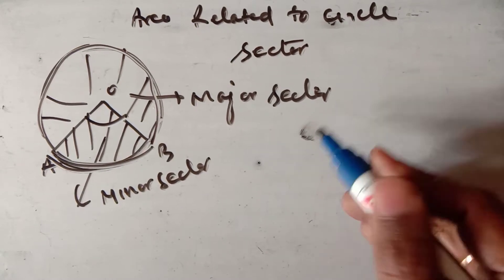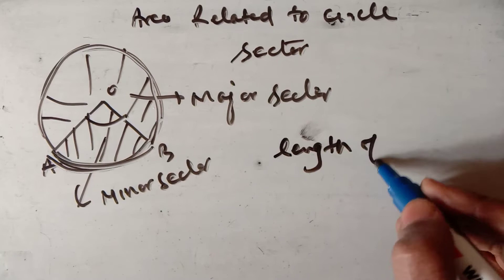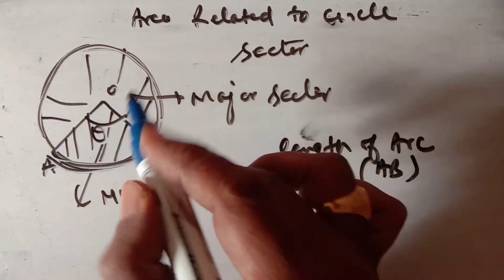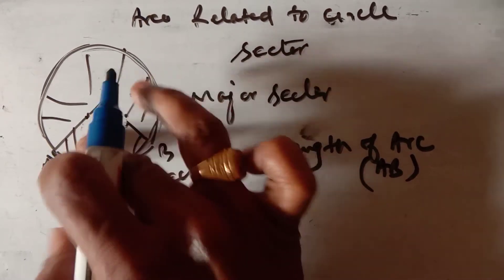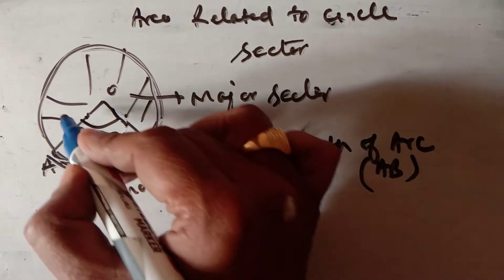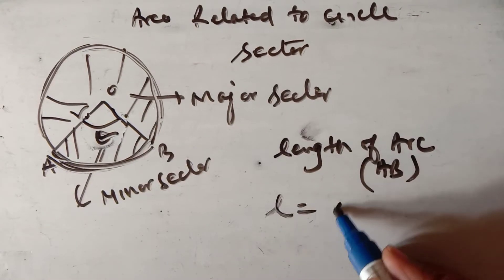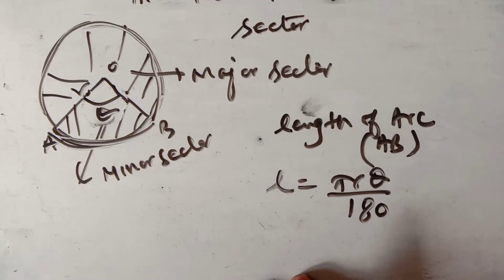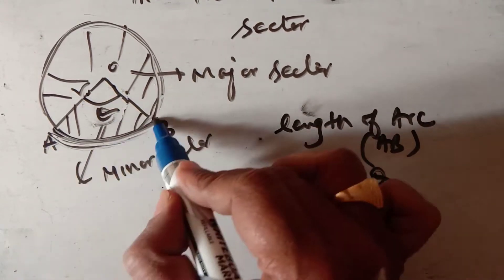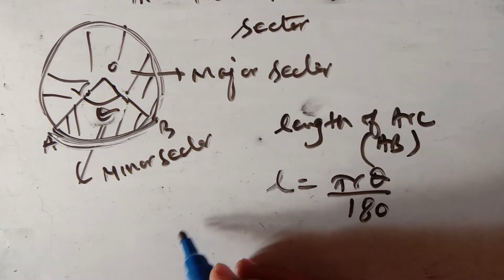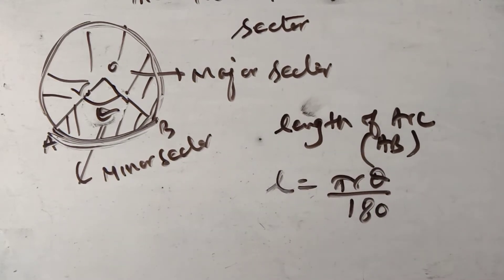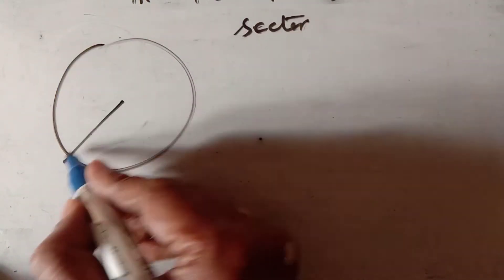The length of arc AB: let the angle subtended by the two radii at the center be theta and the radius of the circle be r. So the length of the arc is πrθ/180 degrees. This is the length of arc AB.